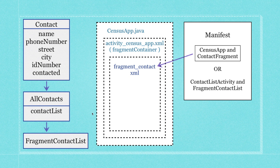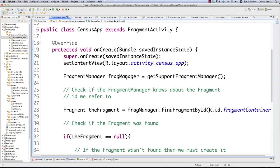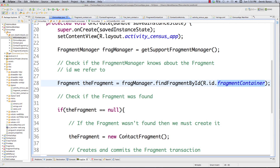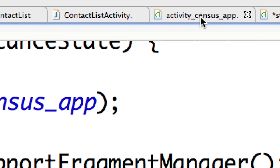Previously we had CensusApp as our main Java class, with an XML file called activity_census_app, and inside of that we had our fragment container. We took ContactFragment — our fragment — and put it in the container. This time we're not only creating the AllContacts class with the array list, but we're also going to bundle everything and shoot it onto the screen using FragmentContactList.